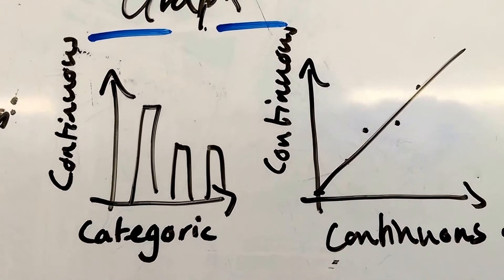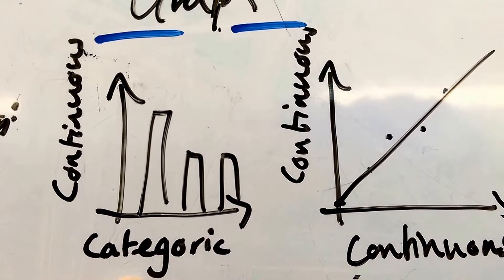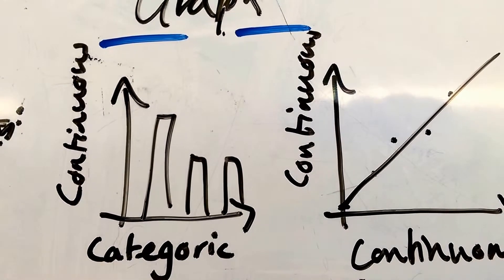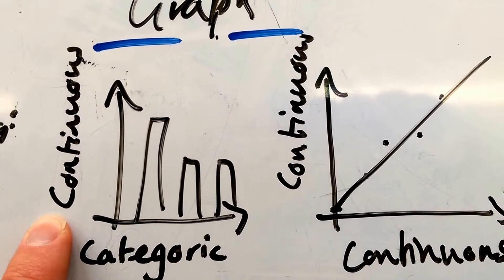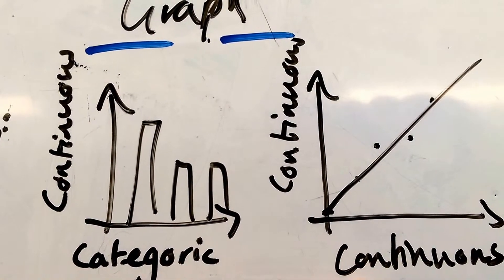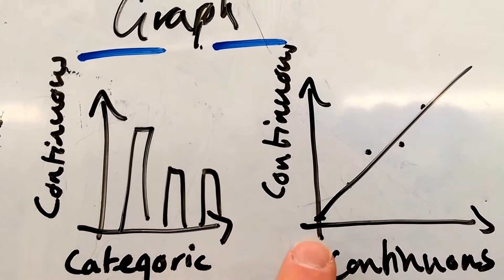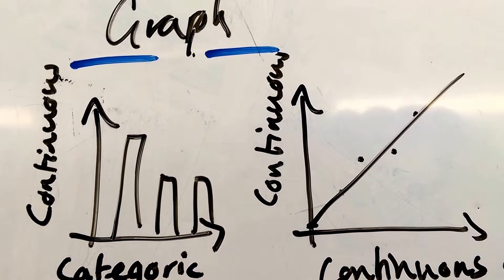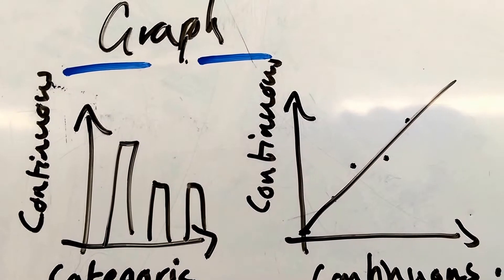And the bar chart is when it's a categoric variable, versus a continuous variable. A categoric independent variable, continuous dependent variable. Line, is when you're comparing two sets of numbers, so two sets of continuous data. And we can get a continuous trend.